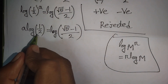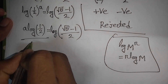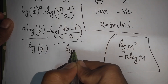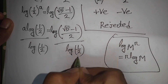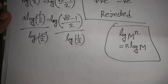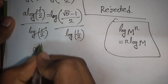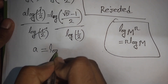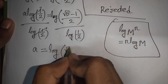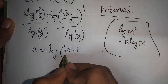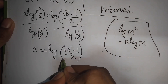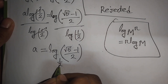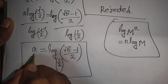Dividing both sides by log(1/2) to isolate a, the log(1/2) on the left cancels. So a equals log of (square root of 5 minus 1) over 2, with base 1/2. This is the final value of a.